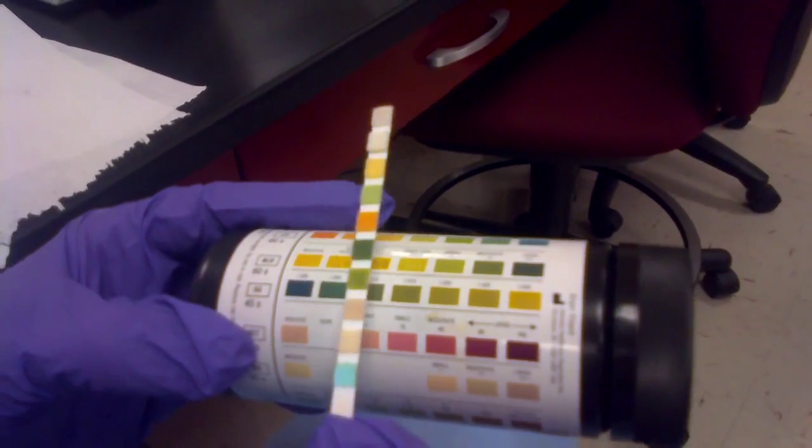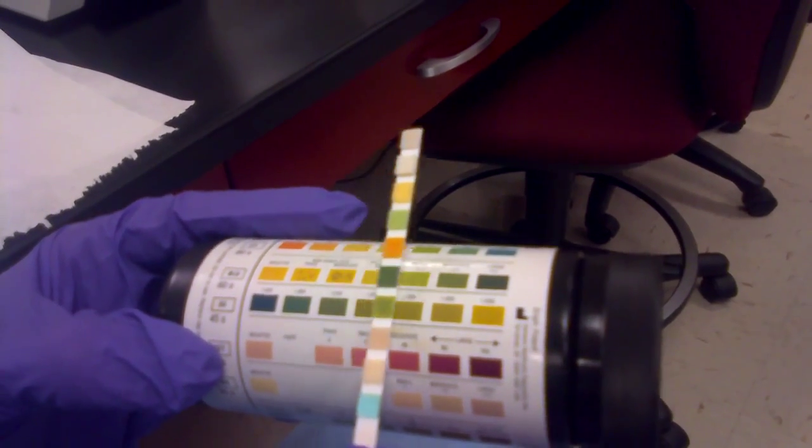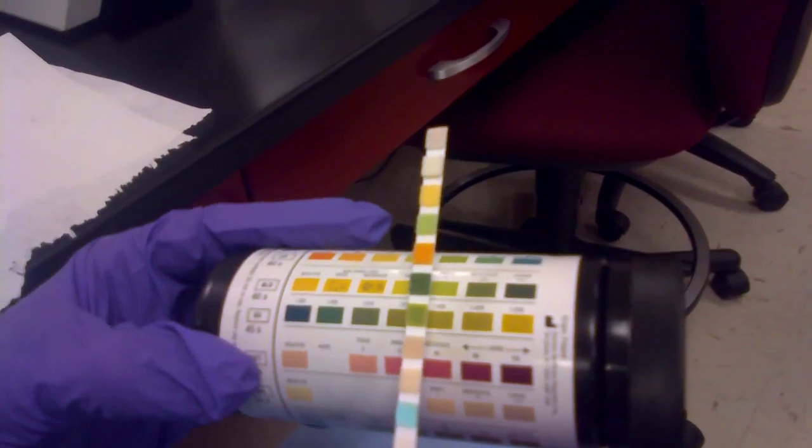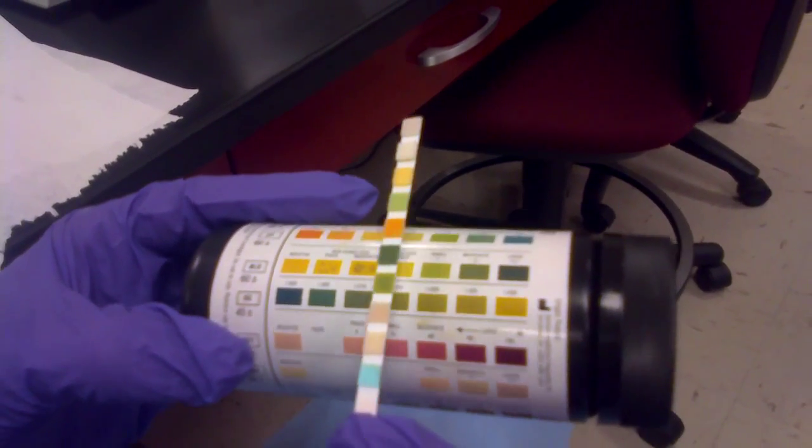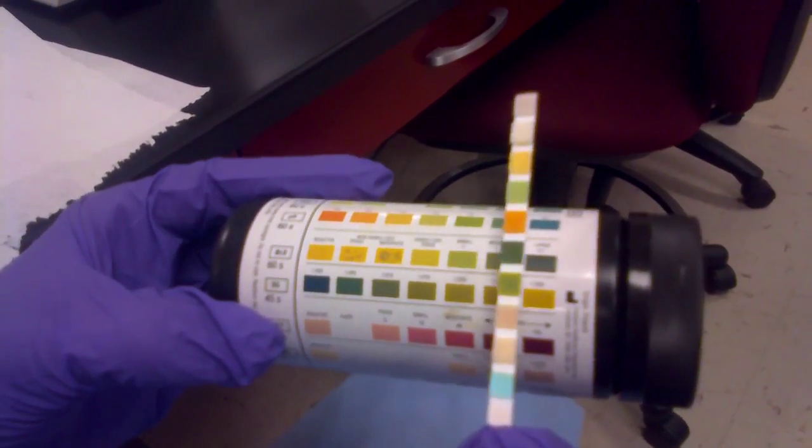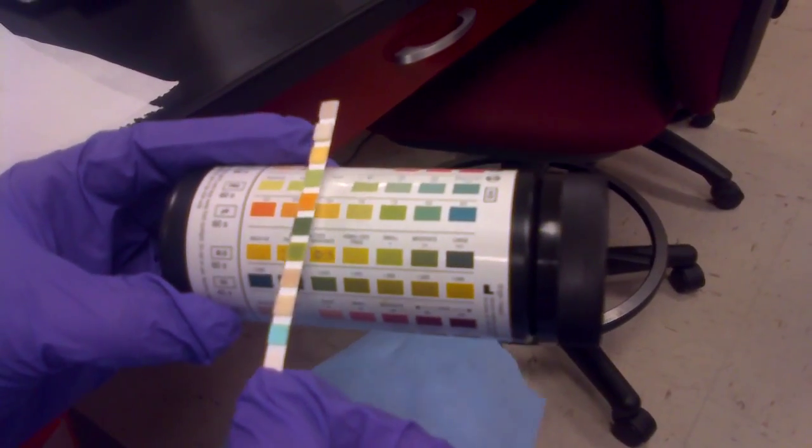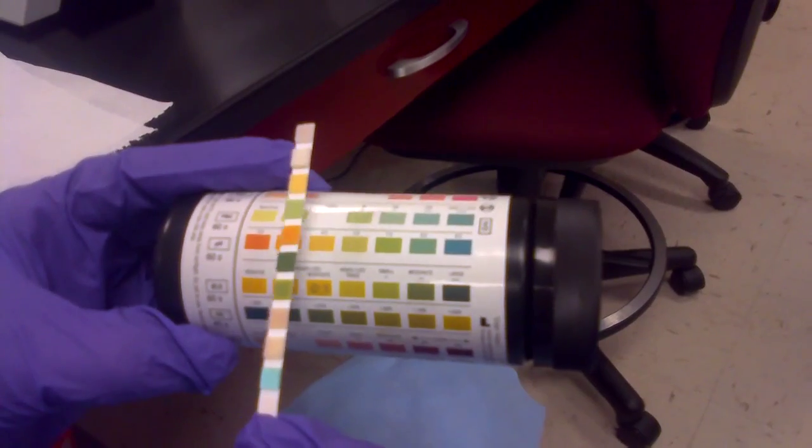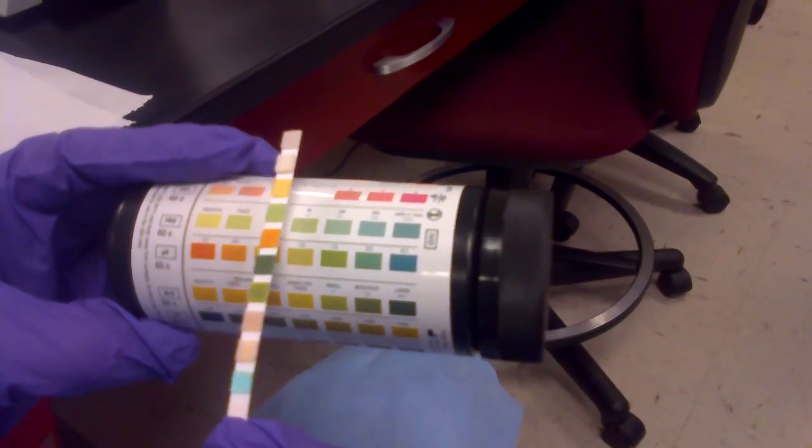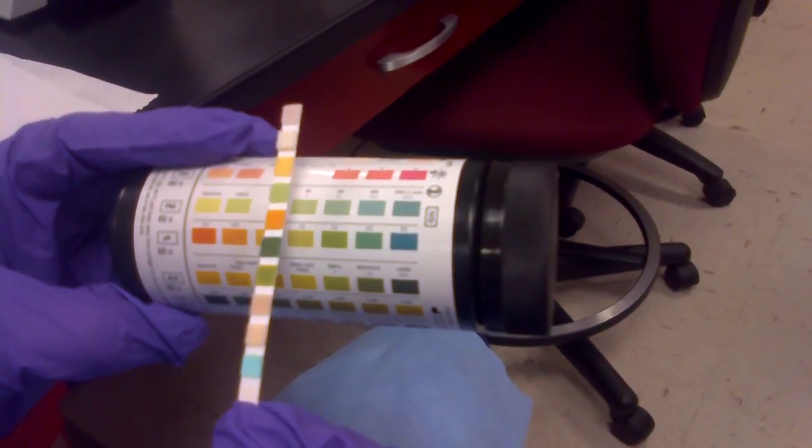Specific gravity is next. We have a specific gravity of 1.015. Next is blood. We have a large amount of blood. pH is next. We have a pH of 6.0. Proteins are next. We have a positive for protein.